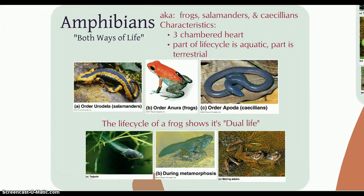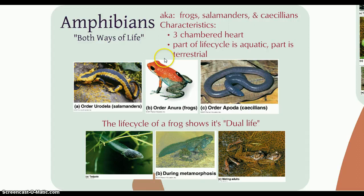The first group of tetrapods we'll look at are the amphibians. Amphi means both, bio is life, so they live part of their life cycle in water and part on land — which makes sense with the transition from aquatic species to tetrapods.